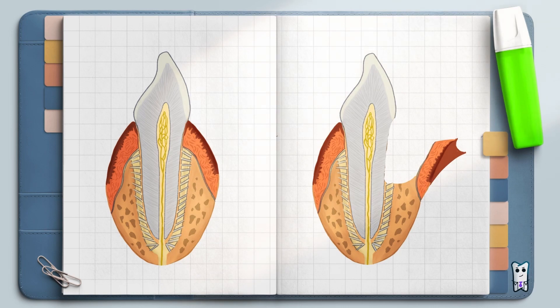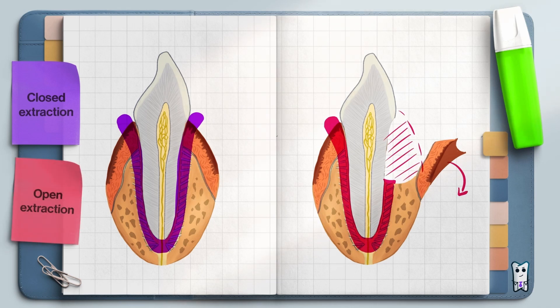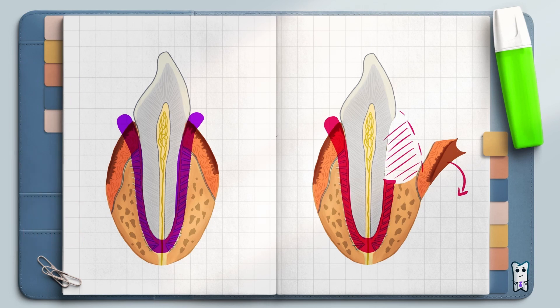Routine dental extraction is the most frequently used surgical procedure in outpatient dental practices. The open technique involves flap elevation and bone removal. Regardless of the chosen technique, there are three essential principles that underpin a proper atraumatic extraction: